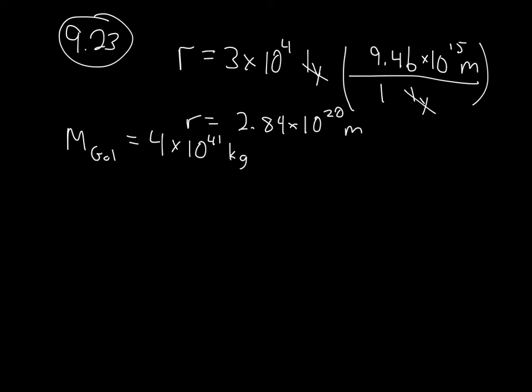For part A, I'm asked to find what is the period, which we denote with the letter T. And for part B, I'm asked to find what is the orbital speed — so I need the velocity of the sun around the galaxy.